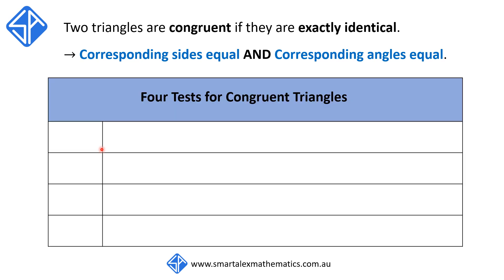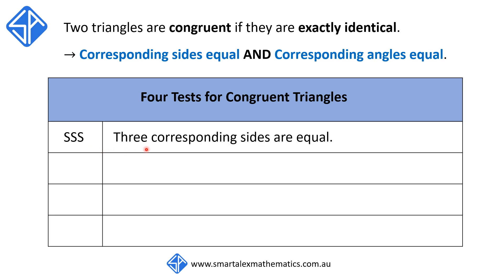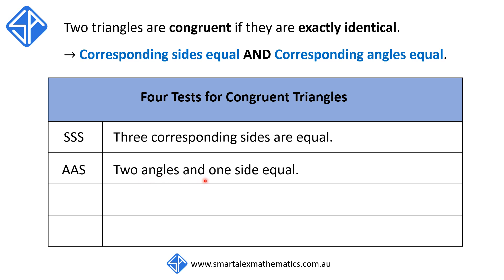There are four tests we can use to prove that two triangles are congruent. The first test is called the SSS test. This is when we can show that three pairs of corresponding sides are equal. The second test is the AAS test. This is when we need to show that two angles in the two triangles are the same, and one pair of corresponding sides is equal as well.